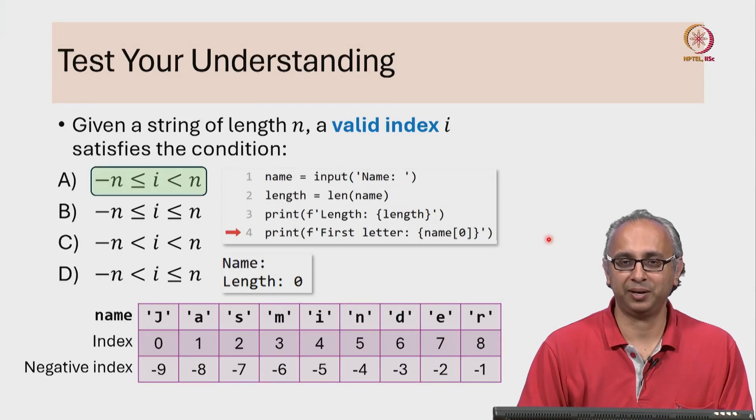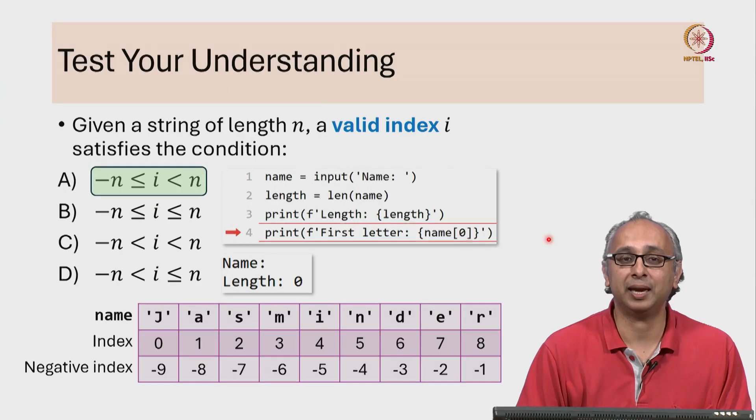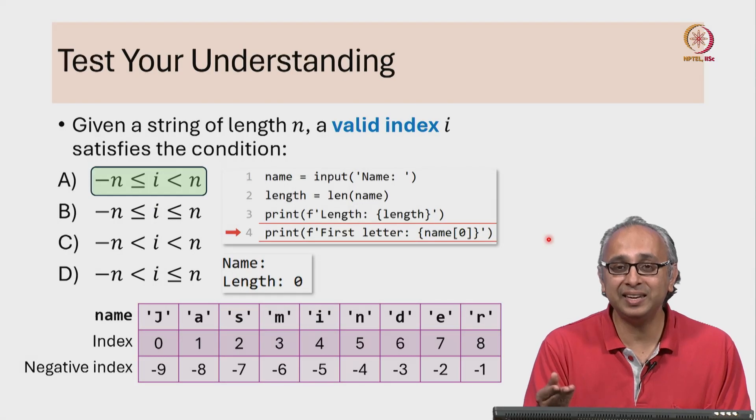Well, if you actually run this on Python Tutor, when you get to line 4, you will get an error. Why? Because 0 is an invalid index.